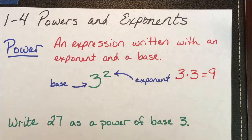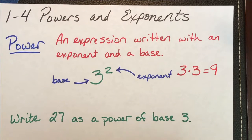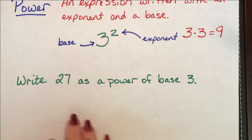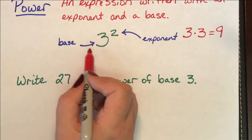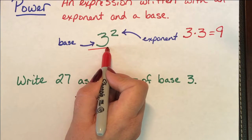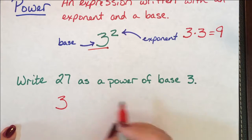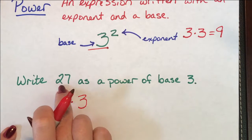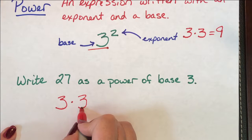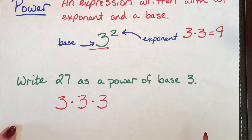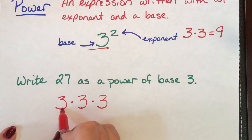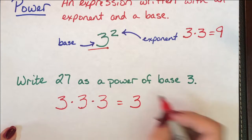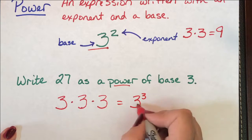Now your book takes this to an extreme level to get you really familiar with these terms. One of the things it asks you to do as a sample question is to write 27 as a power of base 3. So we want base 3 and we're going to continue to multiply 3 to itself until we get to 27. 3 times 3 is 9 and 9 times 3 is 27. So we know that with our base 3 we're going to have a power of 3 to equal 27.